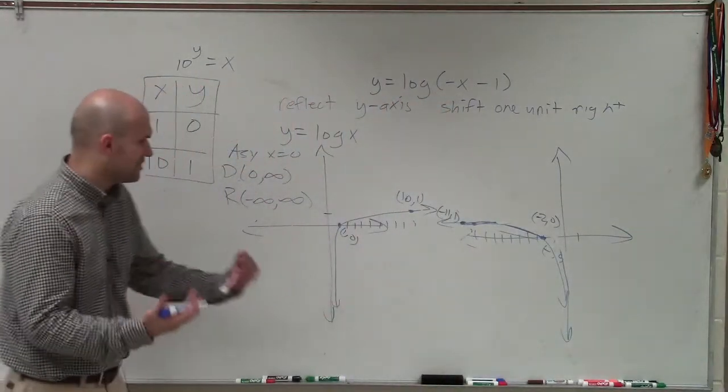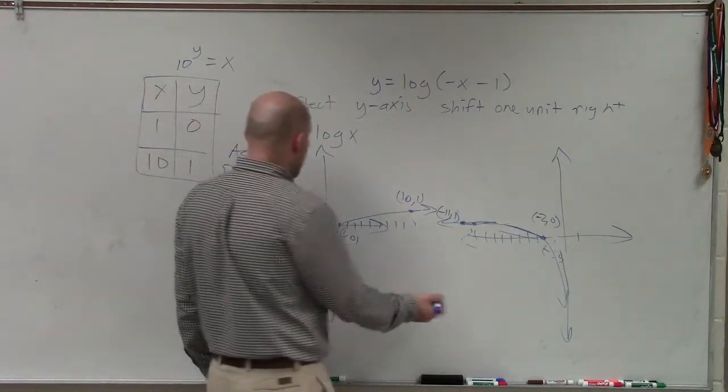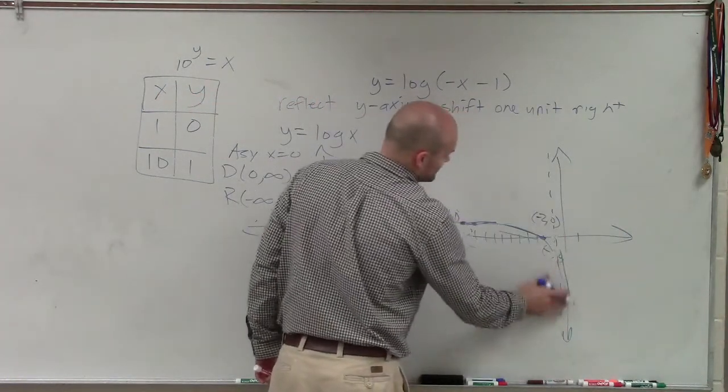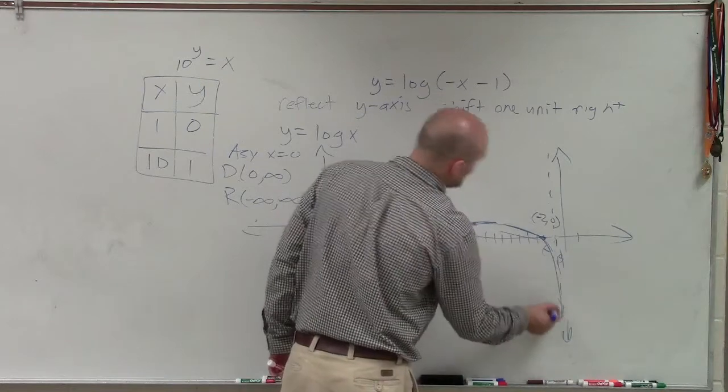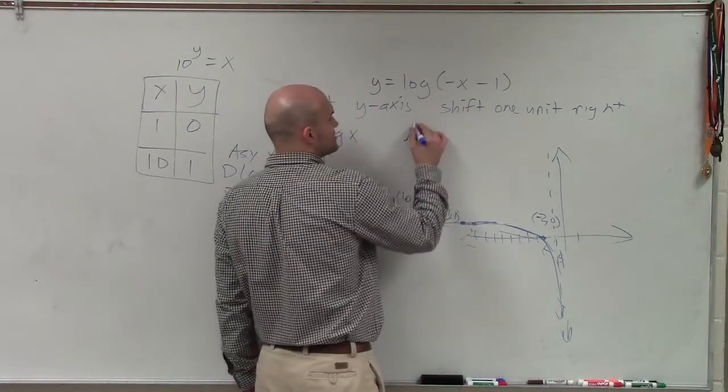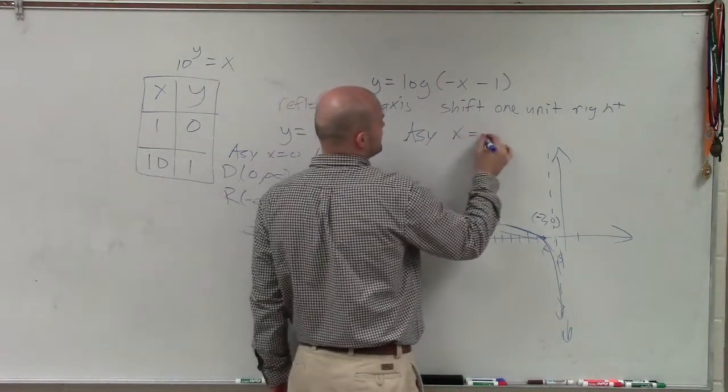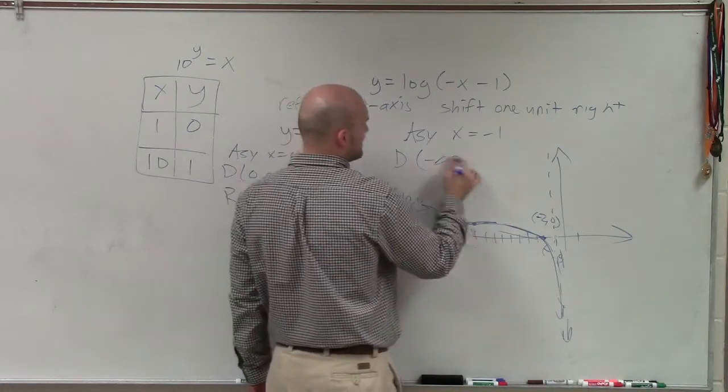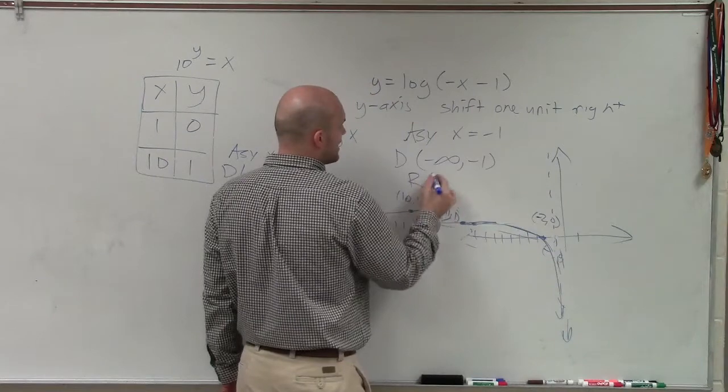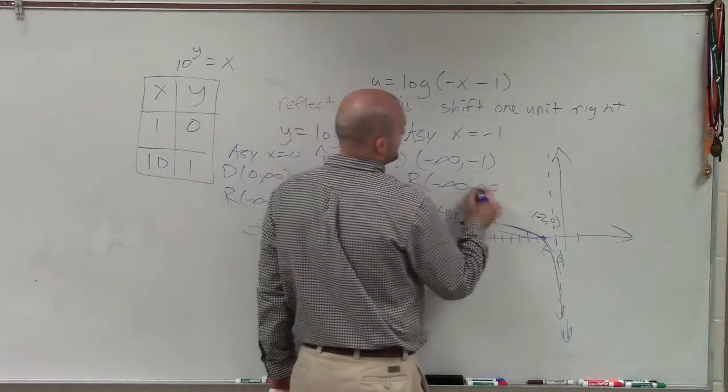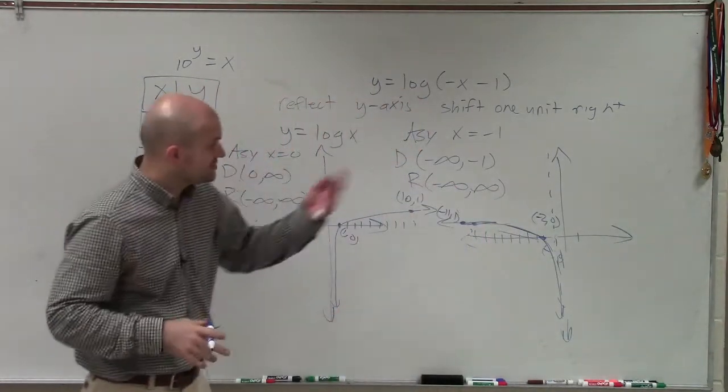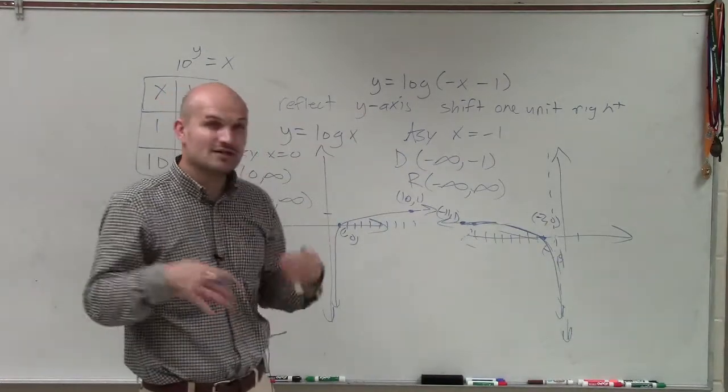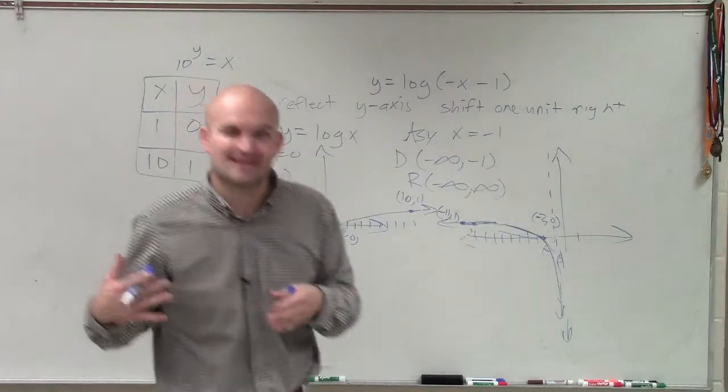Now, since I've shifted the graph one unit to the left, my asymptote that was at x equals 0 is now at x equals negative 1. That's going to affect our domain and range. If my asymptote now is at x equals negative 1, that means my domain is now from negative infinity to negative 1, and my range is still the same, negative infinity to infinity. So there you go, that is how you graph a logarithmic equation with a y-axis reflection and a shift one unit to the left. Thanks.